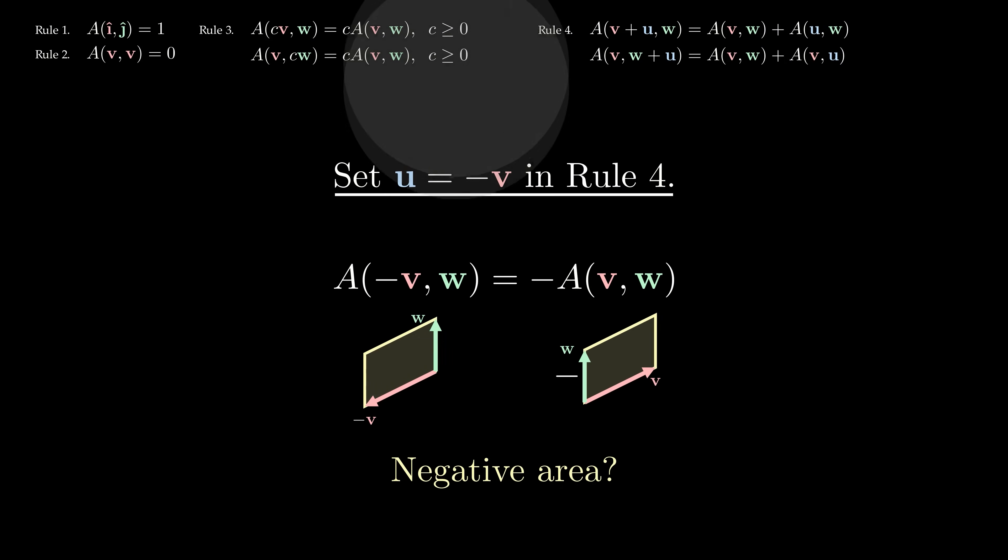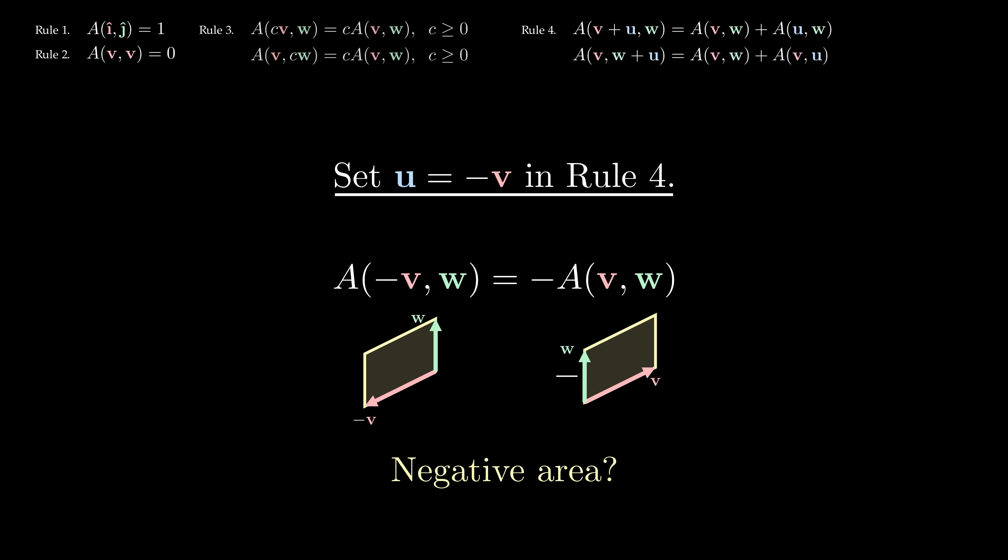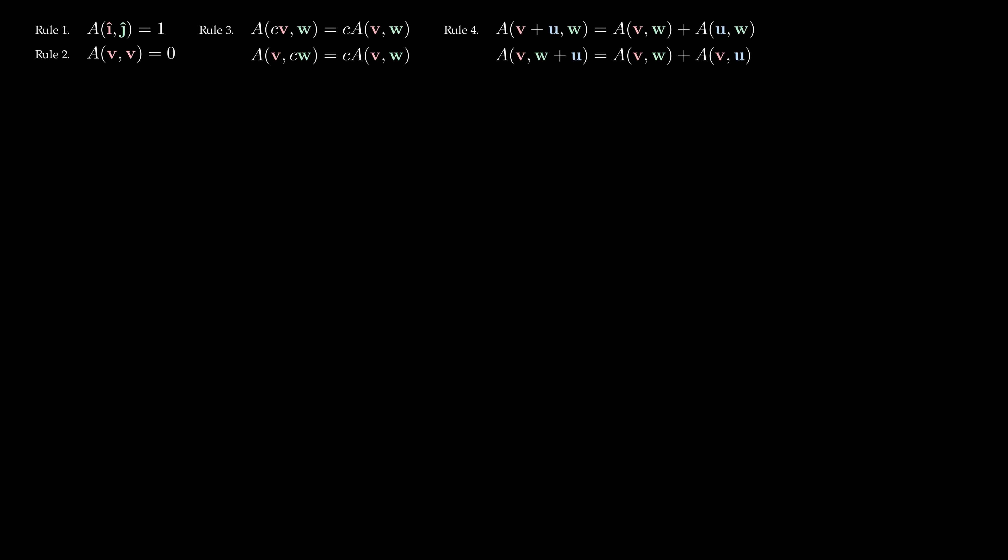So let's keep going. For starters, this lets us remove the condition that c is non-negative from rule 3. Following these ideas further, things get weird.